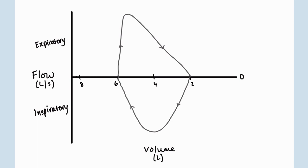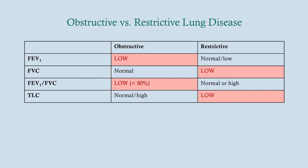On flow volume loops with restrictive disease, we expect slightly reduced volume — a shallower inspiratory phase and a shallower expiratory phase. It looks similar to the normal loop, just smaller. You should know this cold. The FVC is going to be low and total lung capacity is going to be low. Consequently the FEV1 is normal or low, so the FEV1/FVC ratio will be normal or high. You've got to know this — it's so important.